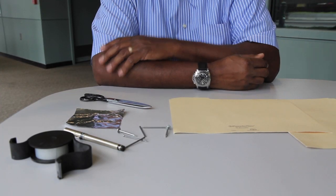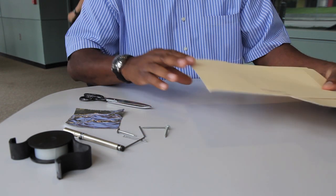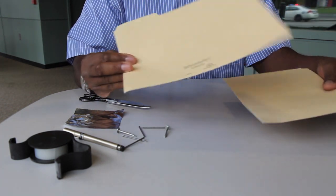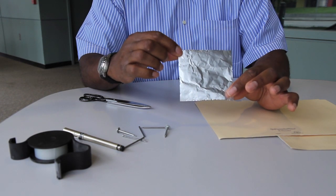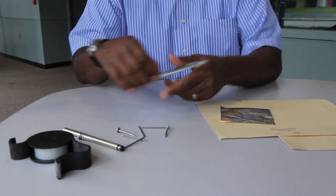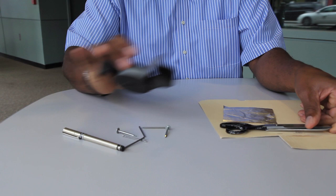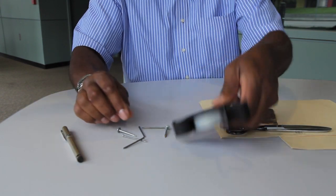All we need is a manila folder. You see I've already cut it in half. A three inch by three inch square of tin foil. A pair of scissors. Some transparent tape. And a nail. About this size will be just fine.